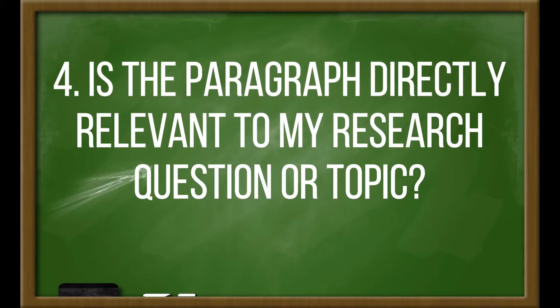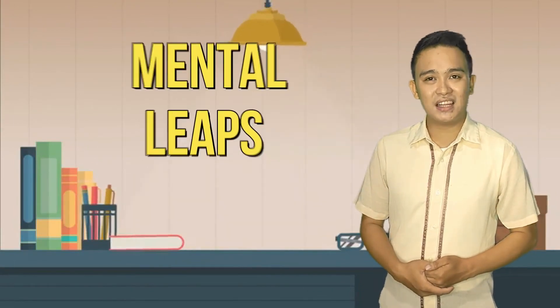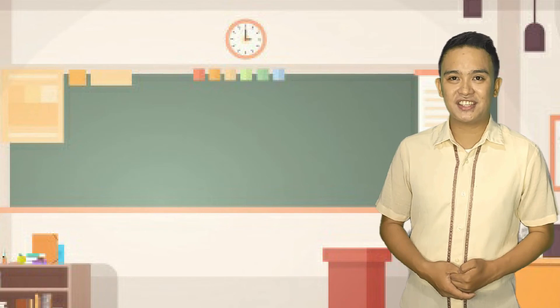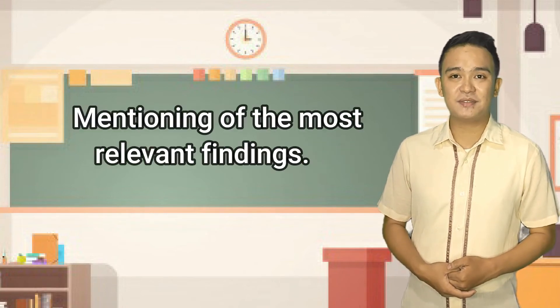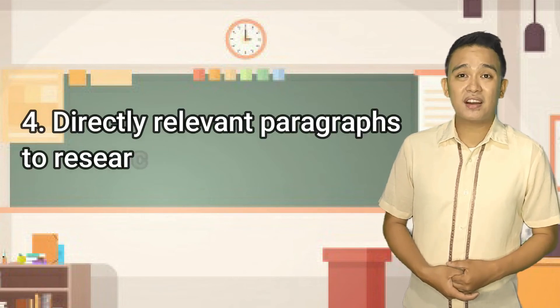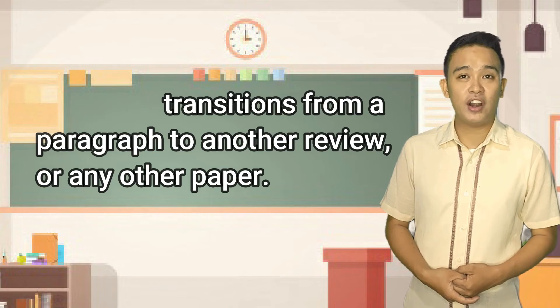Number 4: Is the paragraph directly relevant to a research question or topic? Number 5: Is there a logical transition from this paragraph to the next one? These transitions will help your readers see the connection or relationship between ideas and also prevent sudden mental leaps between sentences and paragraphs. Let's listen to the checklist once more: clear, focused topic sentence for introduction; mentioning of the most relevant findings; paragraph organized around a single idea; directly relevant paragraphs to research question or topic; and logical transitions from one paragraph to another.